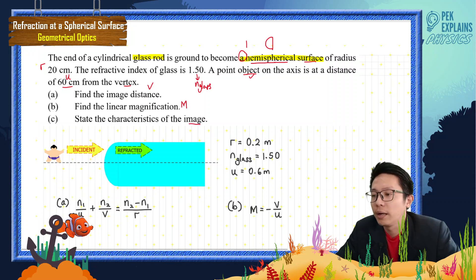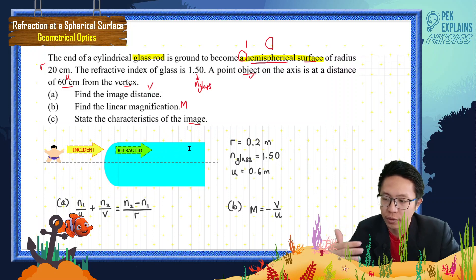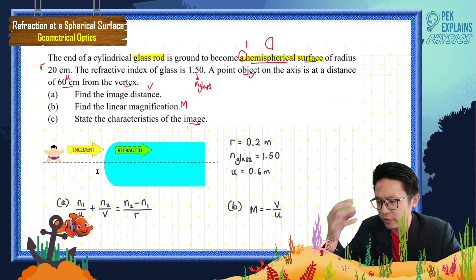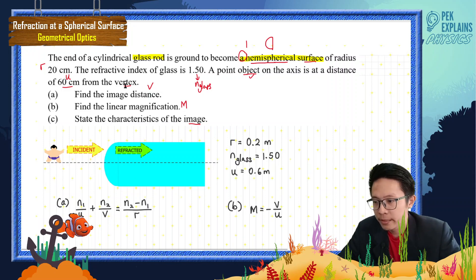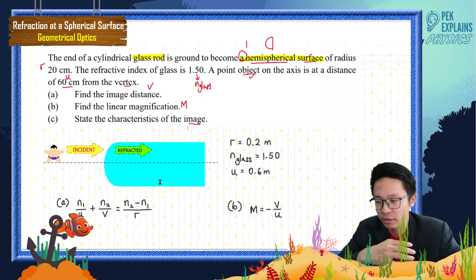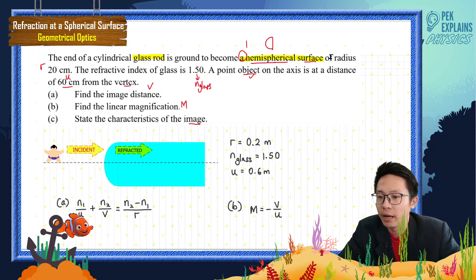A picture is not given in the question, but I'll draw what I imagine. It's important to draw whatever we imagine into a picture form so that it's easy to solve the question. It is a glass rod, and the end of the glass rod is a hemispherical surface — one surface only. The radius of this hemispherical surface is 20 cm, which I convert to 0.2 meters.